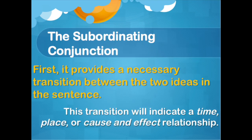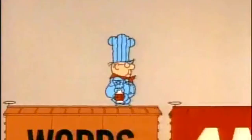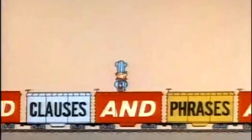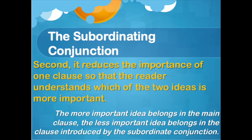The subordinating conjunction does two things. First, it provides a necessary transition between the two ideas in a sentence — just like any conjunction, conjunctions create transitions. But the subordinating conjunction also reduces the importance of one clause so the reader understands which of the two ideas is more important.